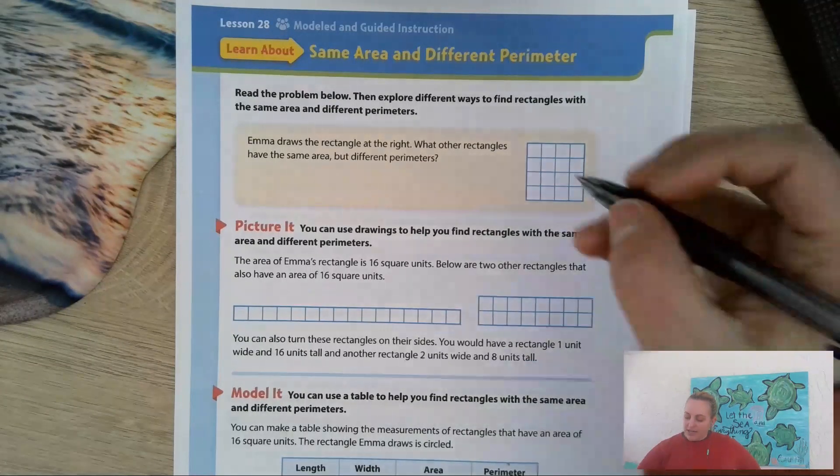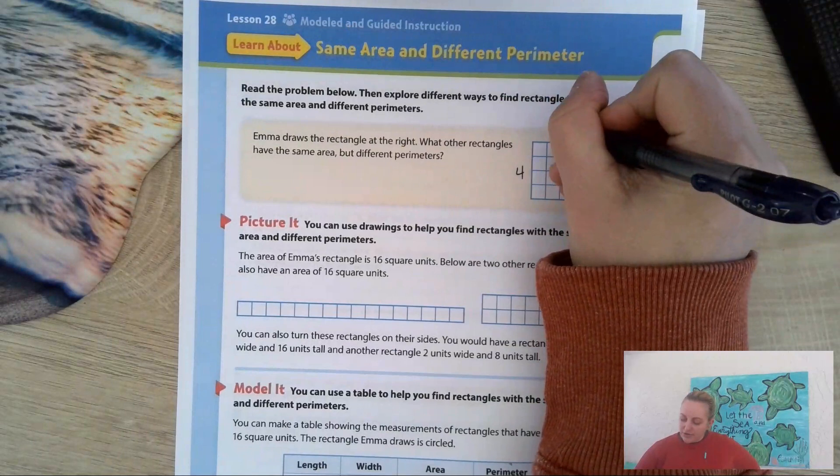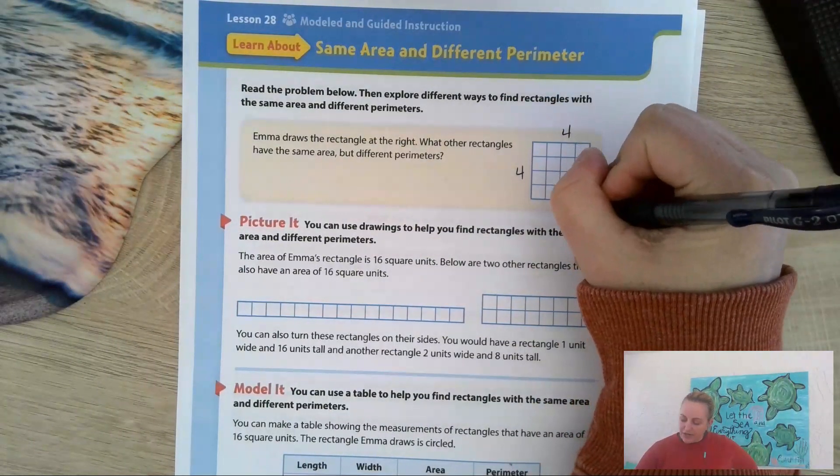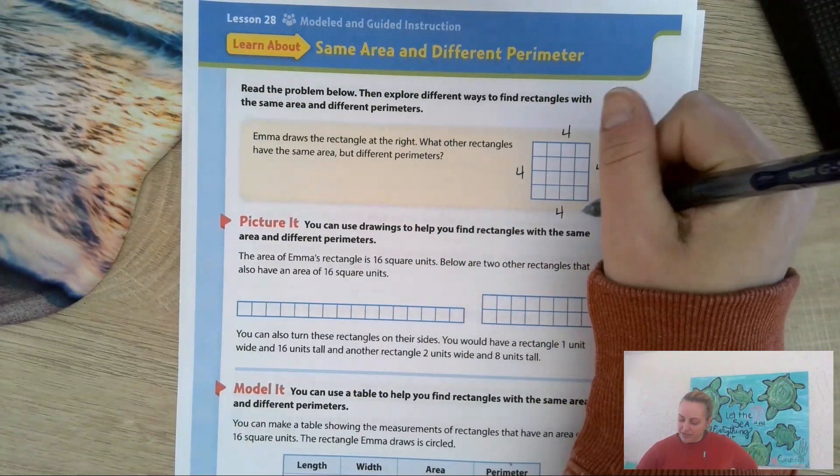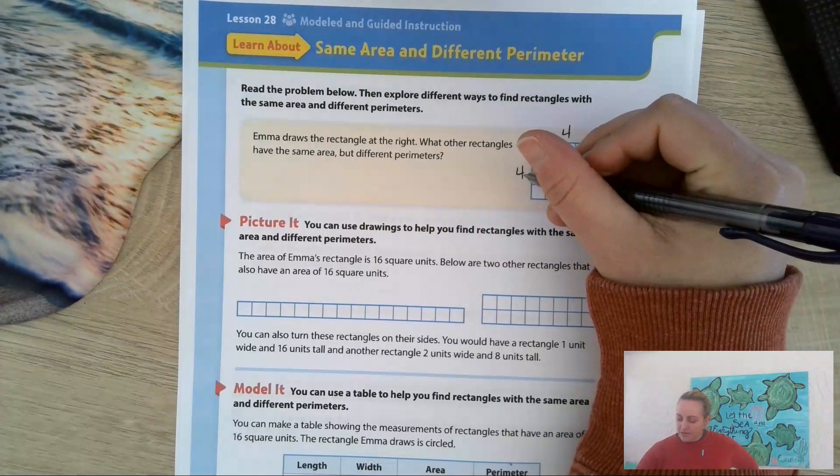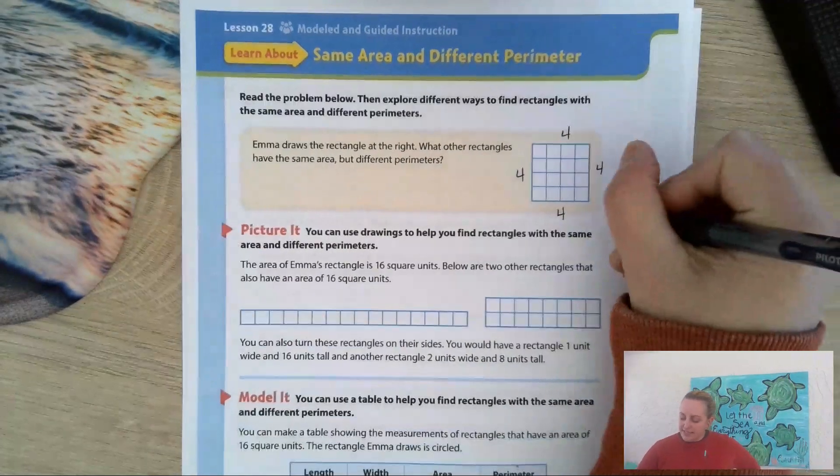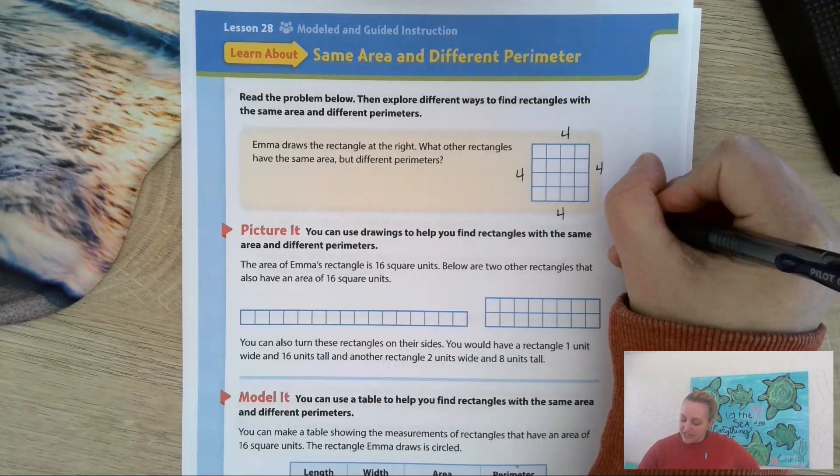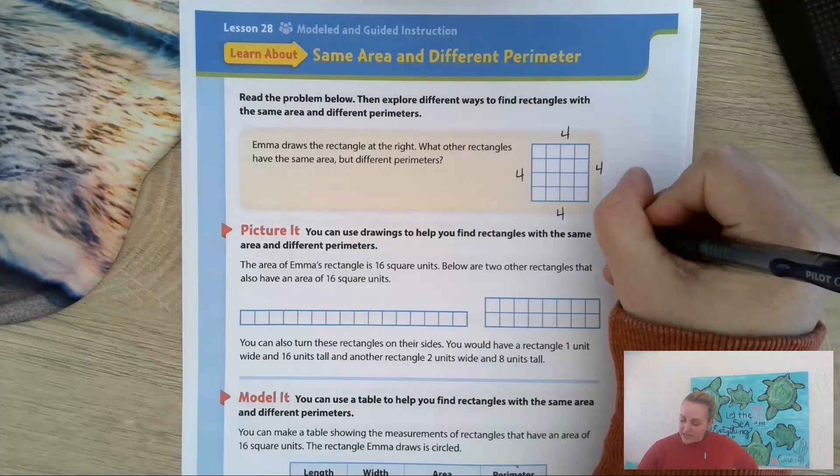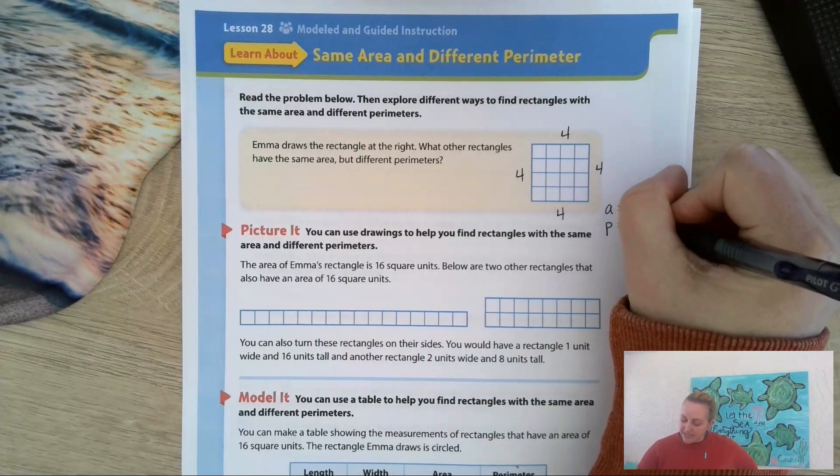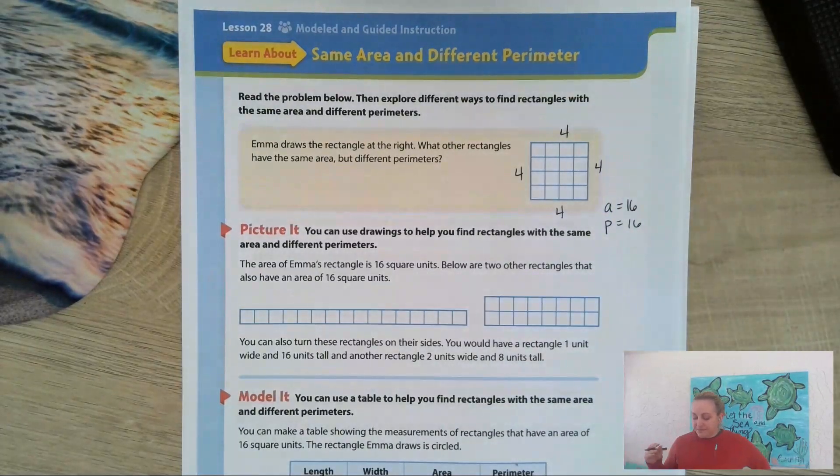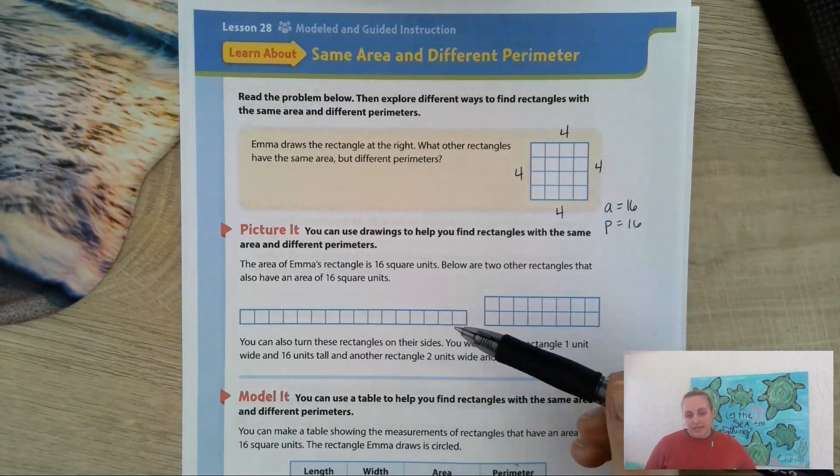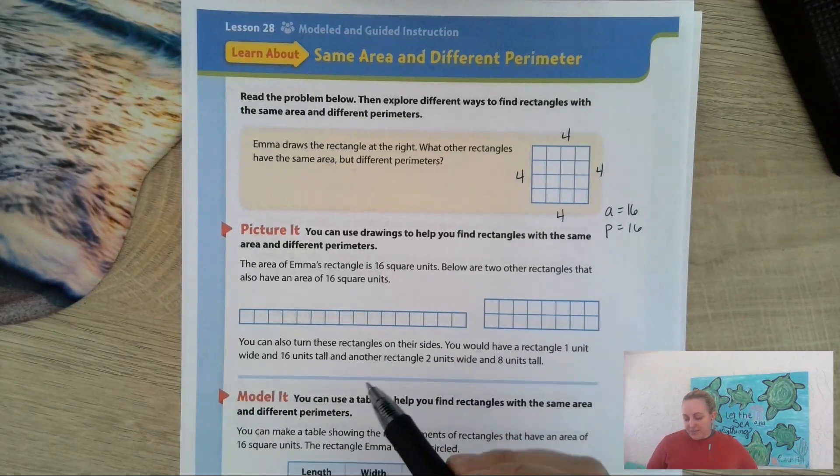So these other two rectangles also have an area of 16. This one has four units here, four units here, four here, and four here. So four plus four plus four plus four, four times four is 16. So this one actually has an area of 16 and a perimeter of 16. It has the same area and perimeter. But here we have the same number of squares.